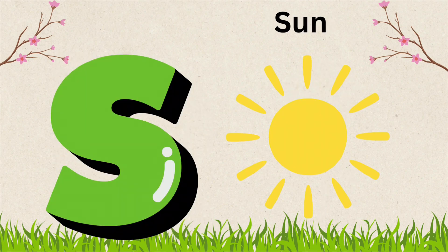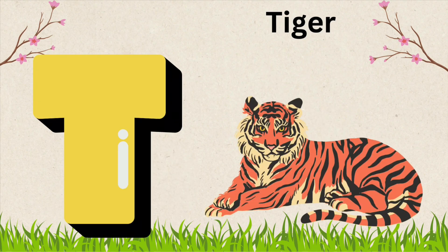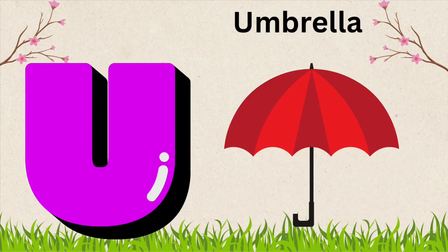S is for Sun. S, U, N, Sun. T is for Tiger. T, I, G, E, R, Tiger. U is for Umbrella. U, M, B, R, E, W, L, A, Umbrella.